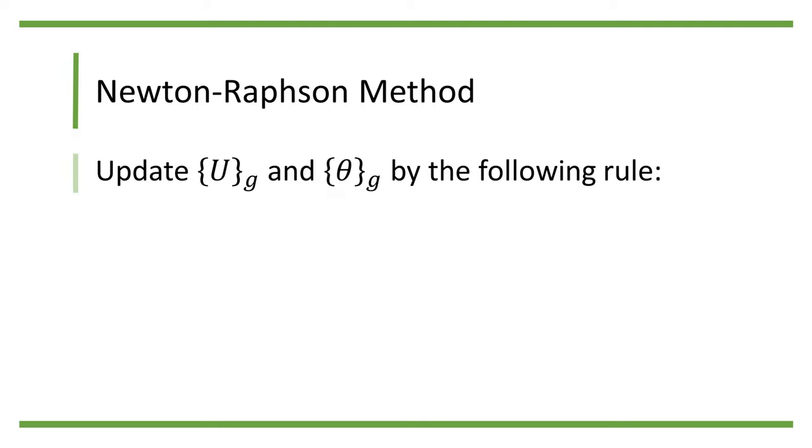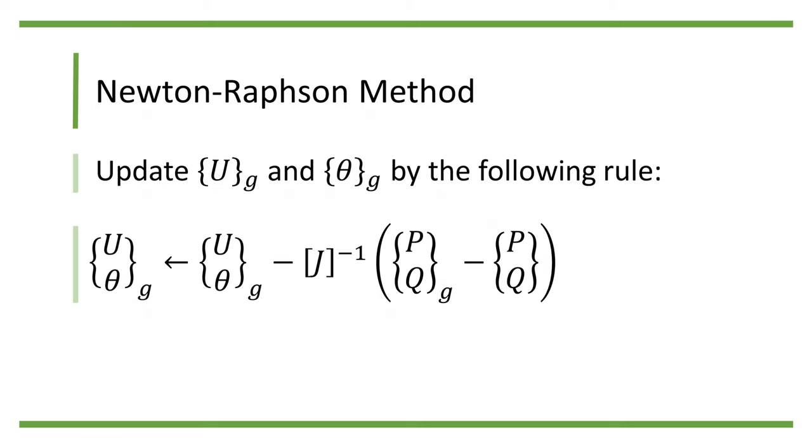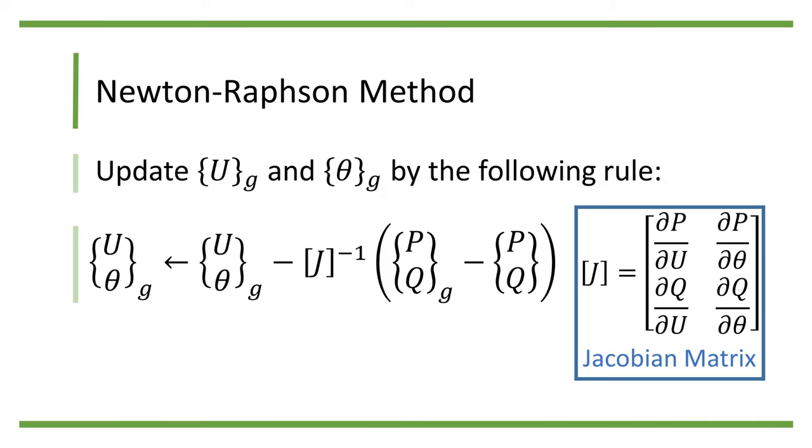Now we can update U_g and theta_g by the following rule: [U, theta]_g equals [U, theta]_g minus J inverse times [P, Q]_g minus [P, Q], where J is the Jacobian matrix. We then repeat this procedure until U_g and theta_g converge to a fixed point.